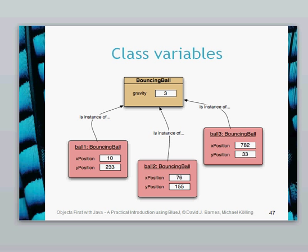Instances of these, so if we have an application which has lots of bouncing balls, then they're all going to have the same gravity. However, they will have different x positions and y positions dependent on where they are in our world. But effectively, the gravity will be the same.